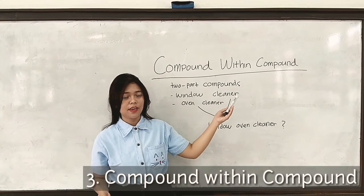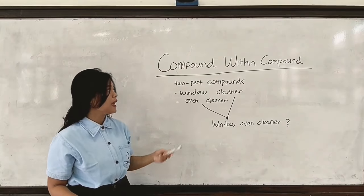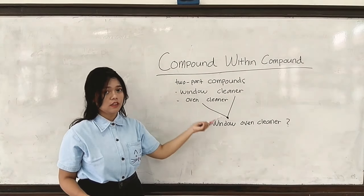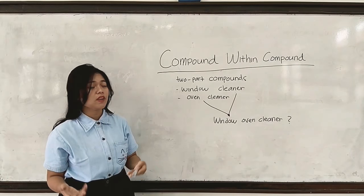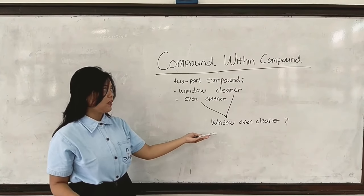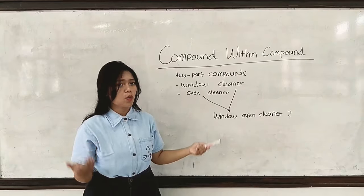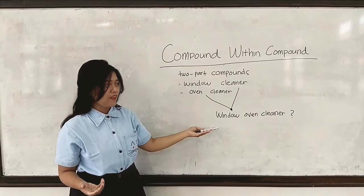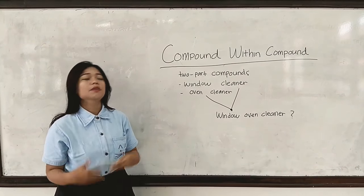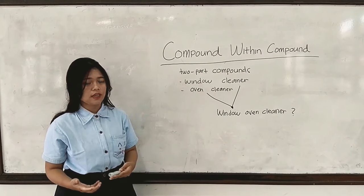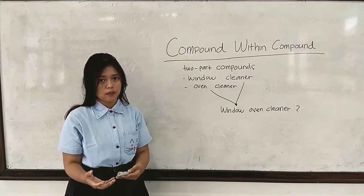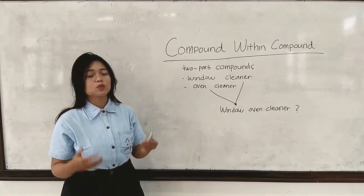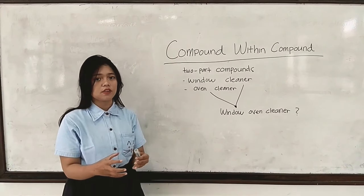Consider the two examples I have written: there are two compound words. The first is 'ladle cleaner' and 'clothing cleaner.' From these two examples, can we generate a new word which refers to a compound within a compound, like 'window oven cleaner'? Probably yes, but it doesn't necessarily mean something that cleans both windows and ovens. Rather, it refers to something that cleans an oven that has a see-through panel. So for these examples, we know that certain compounds carry a different meaning when we put the words together.